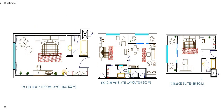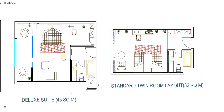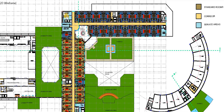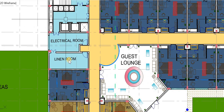This is the detailed layout of the standard room, which has a separate toilet, a closet, and a bedroom. The deluxe suite is very similar to the standard room — it's just that a balcony has been incorporated in the design. This is the detail of the standard twin room layout, which has two separate twin beds.